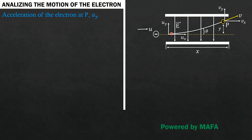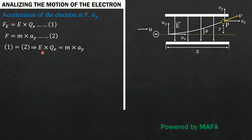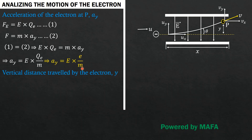Since the particle enters the electric field, the force experienced is the electric field strength times the charge of the particle, which also equals mass times vertical acceleration — since there is no horizontal acceleration. Equating these: eE = m·a_y. Dividing both sides by m and substituting the charge of the electron e, we get the vertical acceleration a_y = eE/m, where E is the electric field strength, e is the charge of the electron, and m is the mass of the electron.